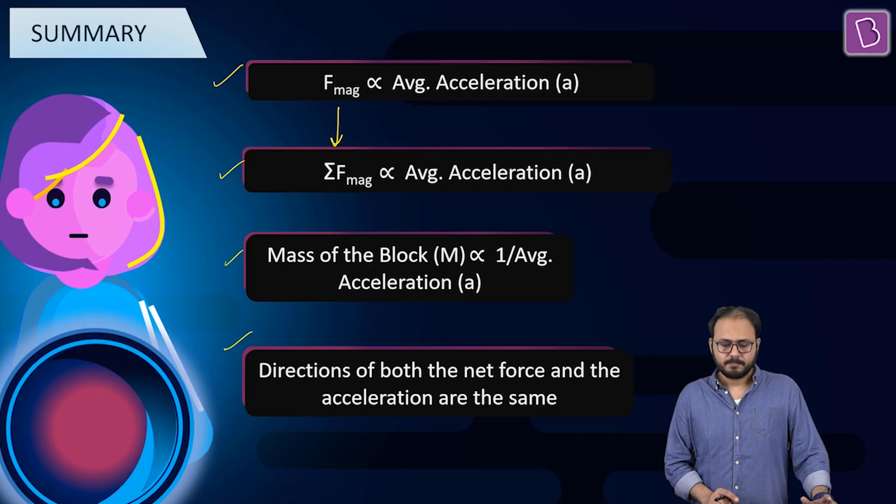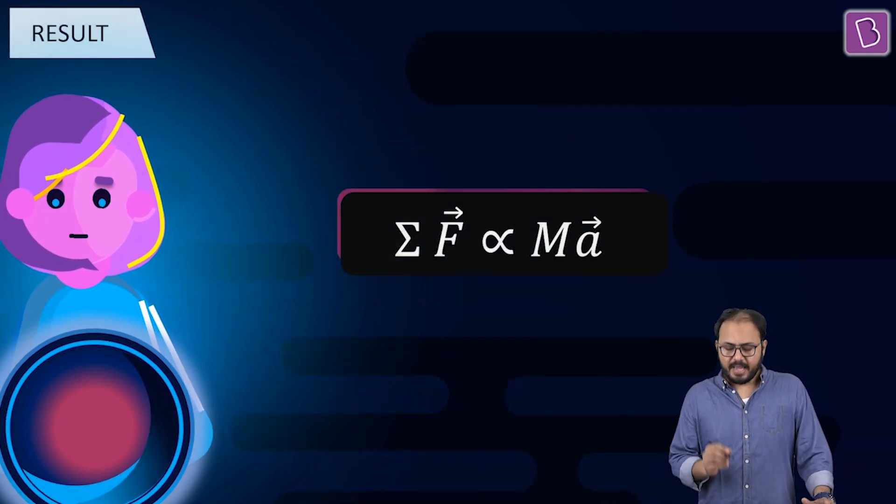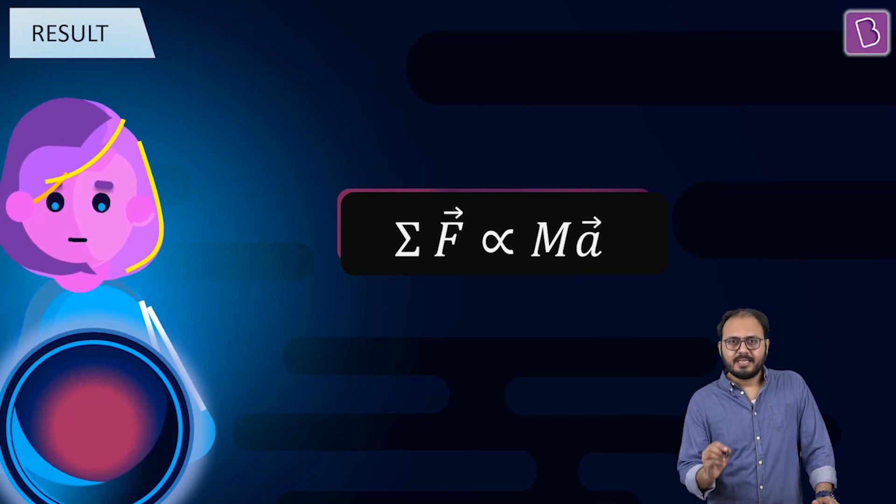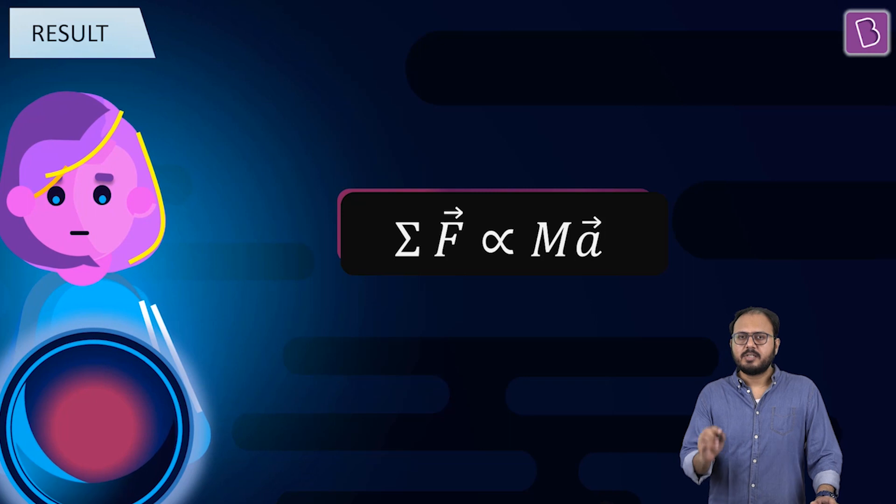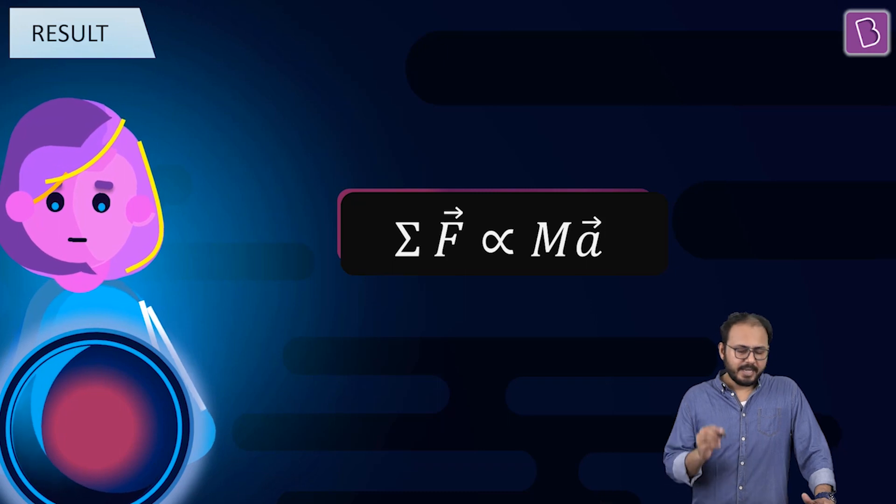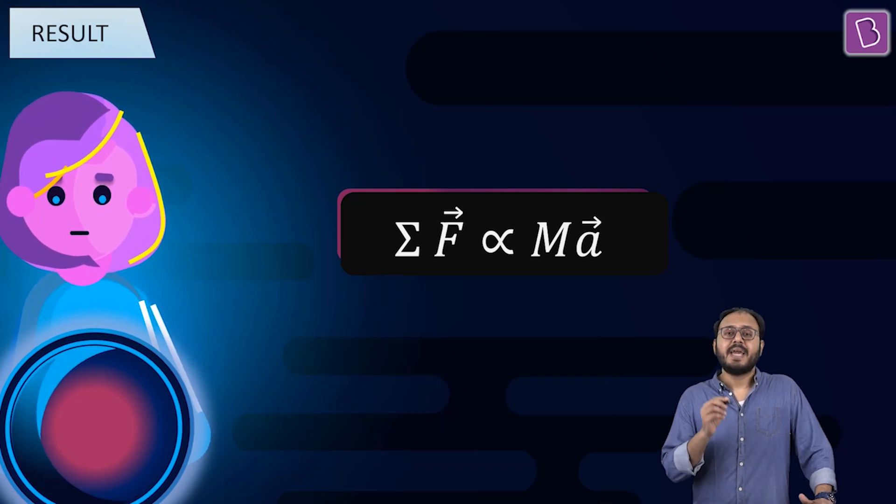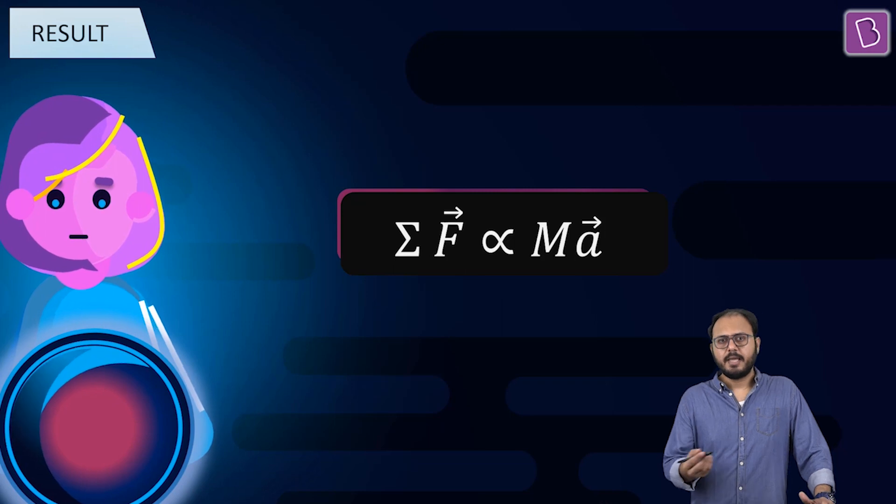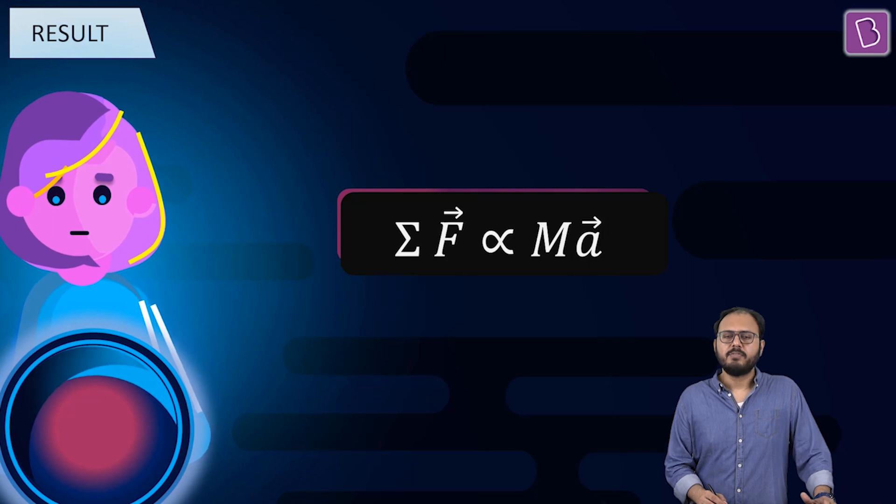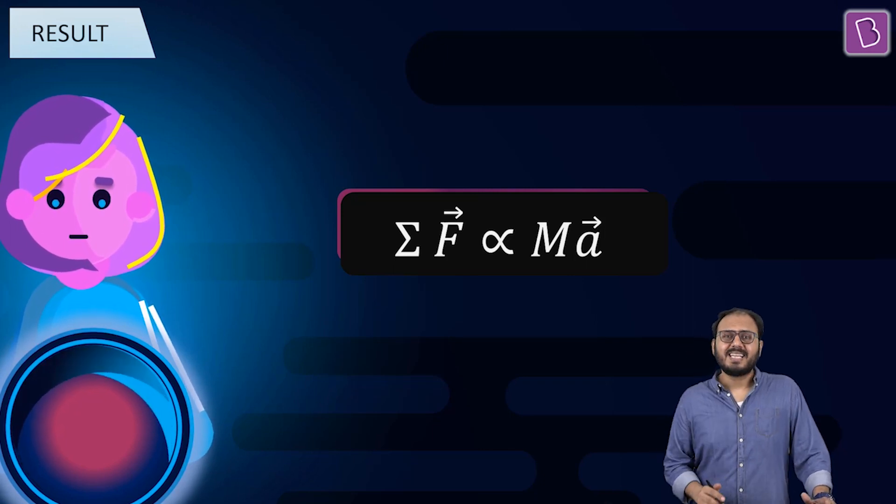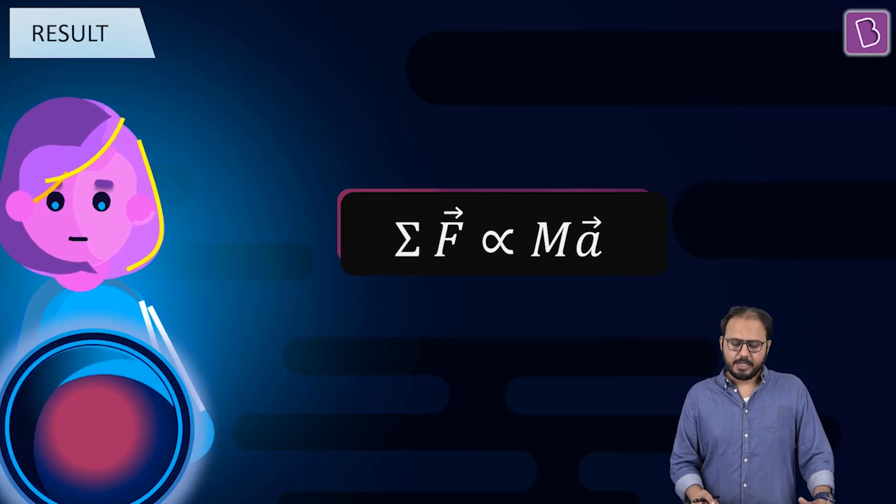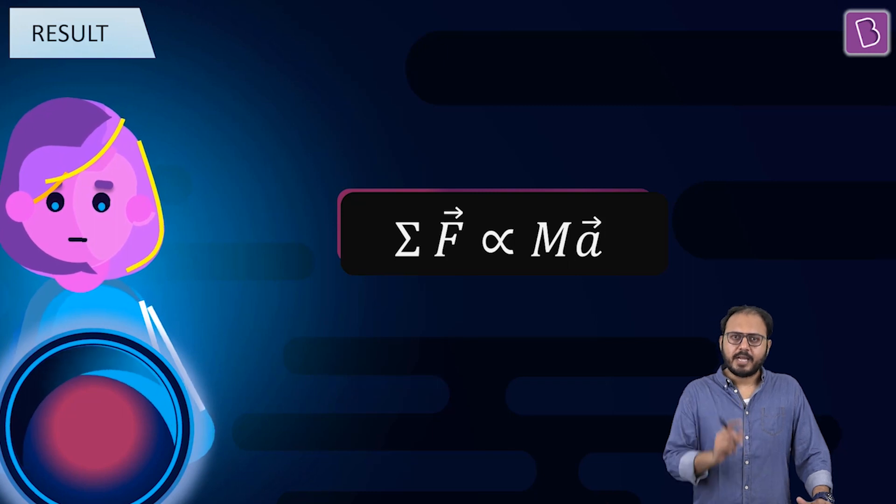Madova, do the honours. What we get is sigma F proportional to MA. Sigma F, the net unbalanced external force acting on a body, is proportional to its mass multiplied by acceleration vector. If force is constant, acceleration is constant. Because mass I am treating as a constant here. In the modern world, proportionality constant K is chosen as 1 and the equation becomes sigma F is equal to MA. Did you get that?